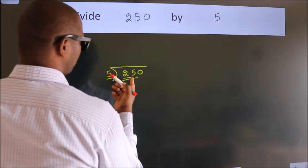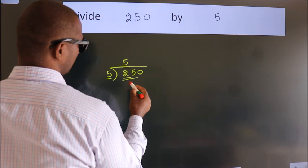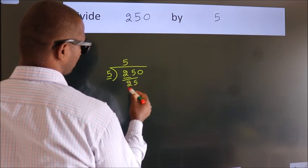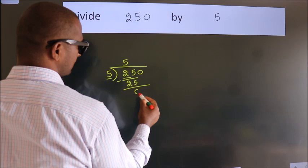When do we get 25? In 5 table. 5 fives, 25. Now we should subtract. We get 0.